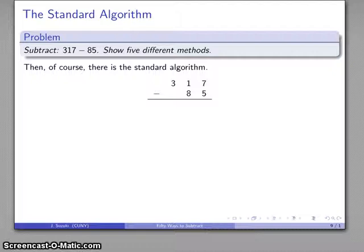That's 317 minus 85. I can subtract 5 from 7. That's not a problem. I can't subtract 8 from 1. So I have to trade one of these for 10 more in the next place.